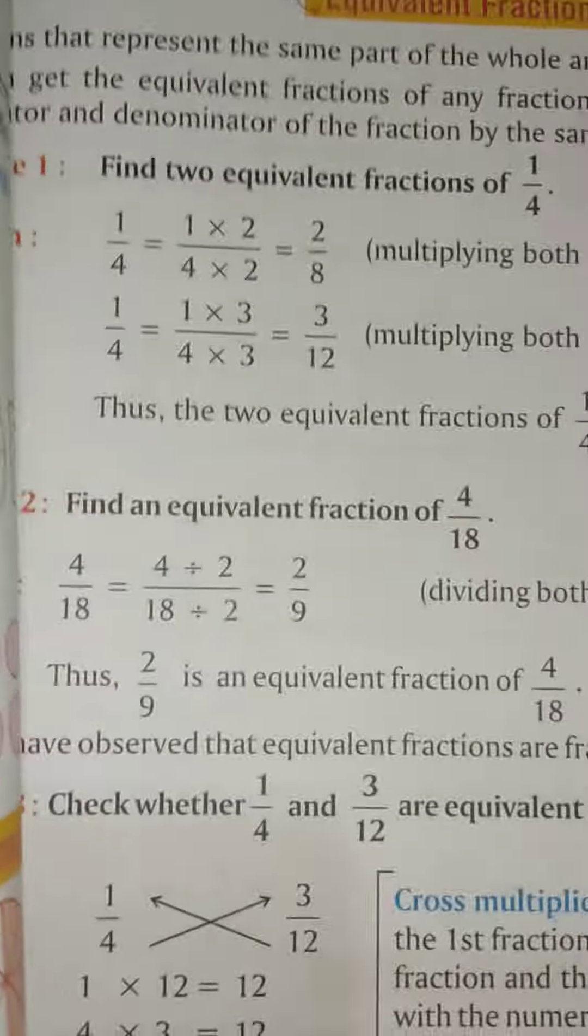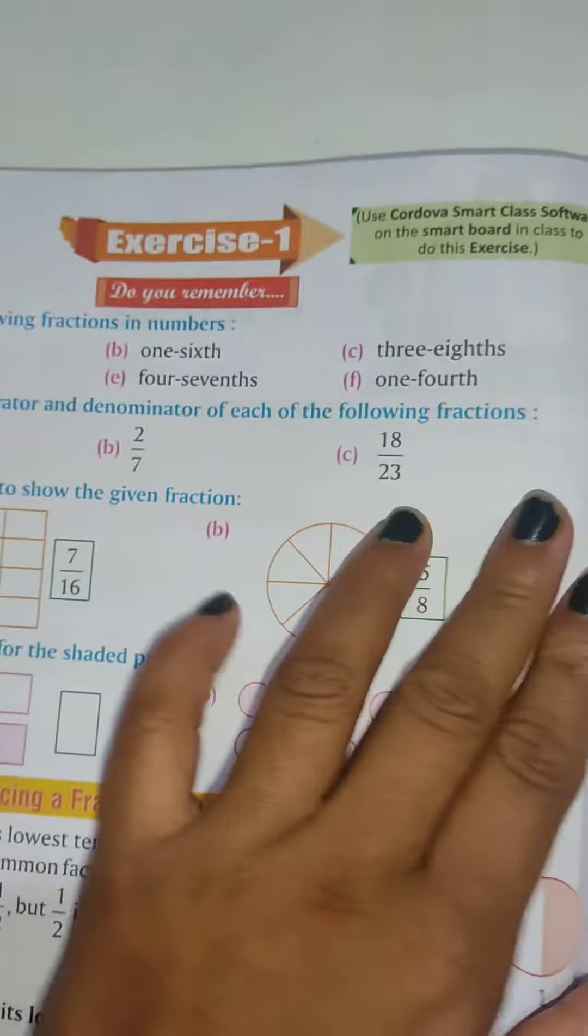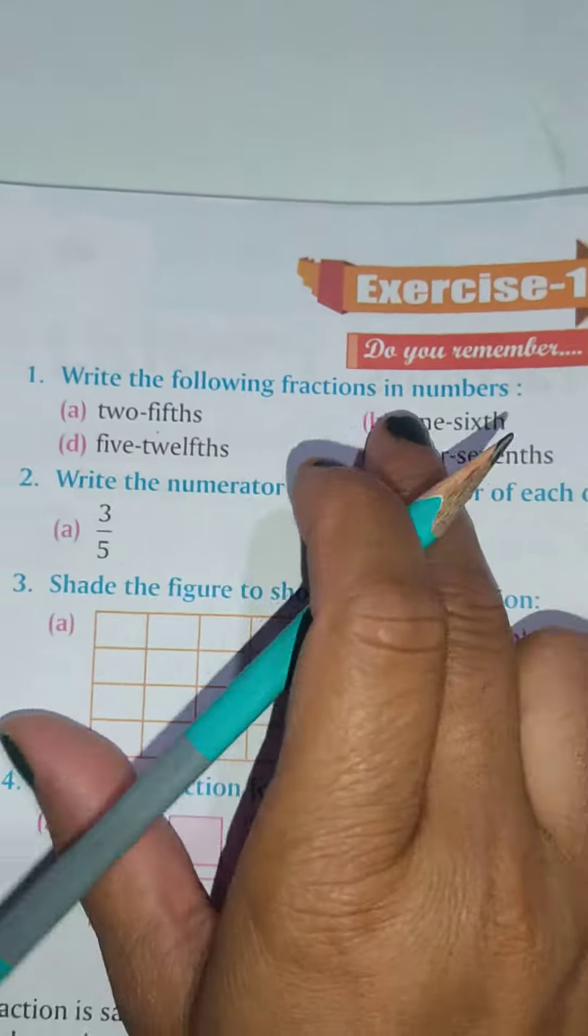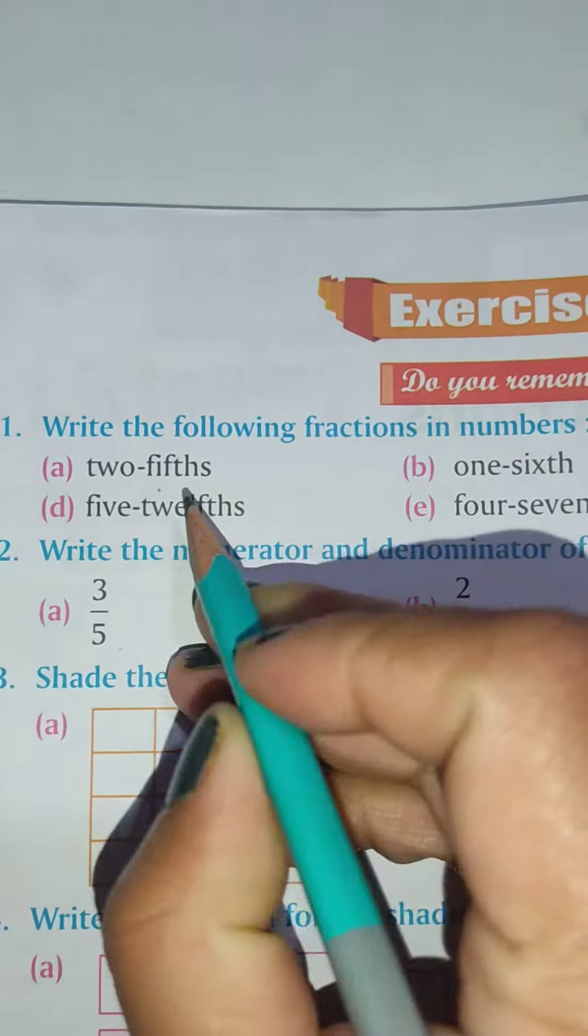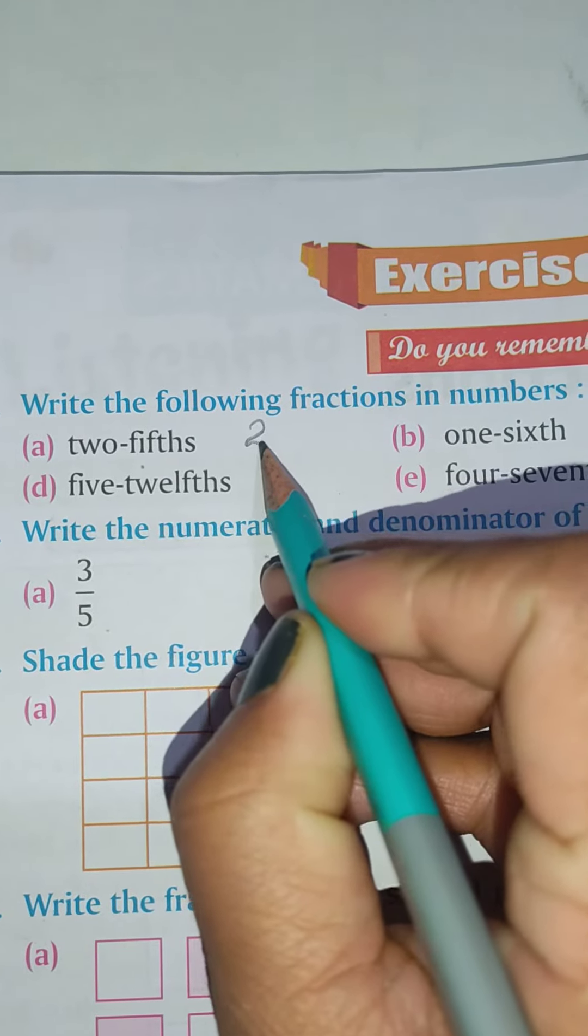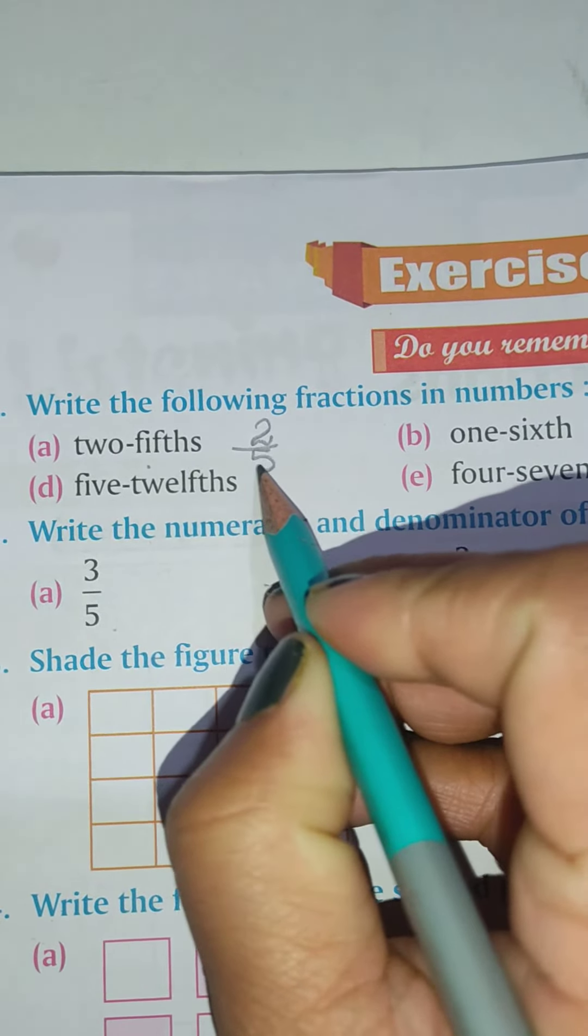Now let's move to exercise one. This you have to do in your book itself. Write the fractions for the following in numbers: two-fifths. How are you going to write it in fraction? 2 will be your numerator and 5 will be your denominator.